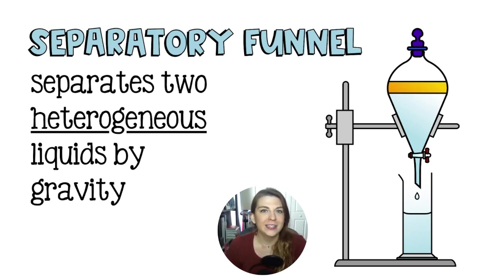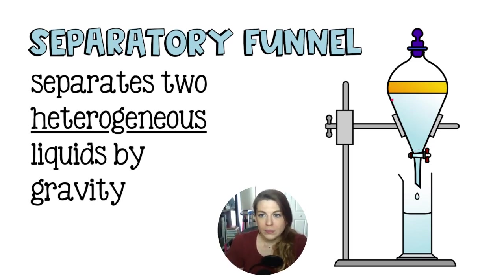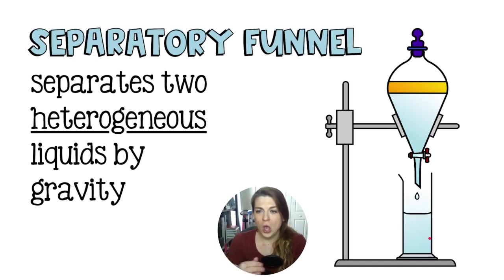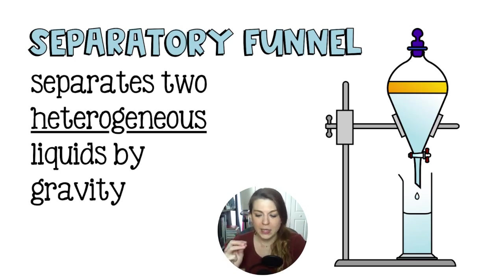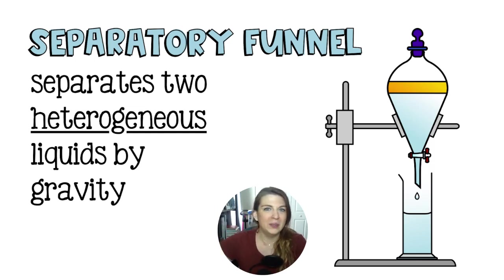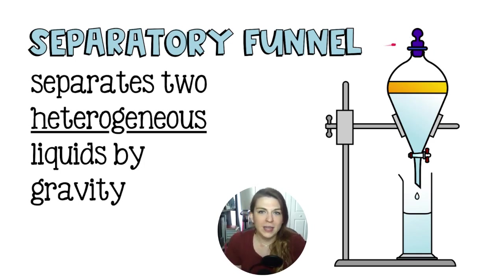You open the small faucet at the bottom of the funnel and drip out about 95% of the water into a beaker. Then you close the spout, move that beaker aside, and use a waste beaker to catch the interface where water and oil meet, since it's hard to get purely one or the other at that boundary. Once you're streaming all oil, you close it again, discard the mixed waste, and finish draining the remaining oil — either out the bottom or the top.